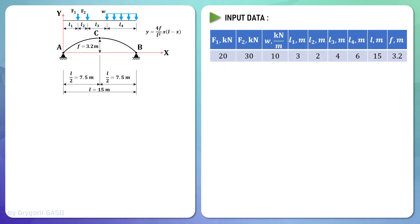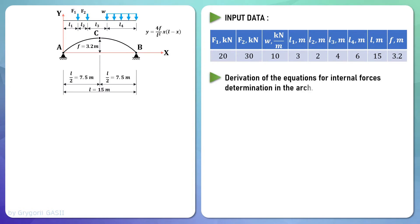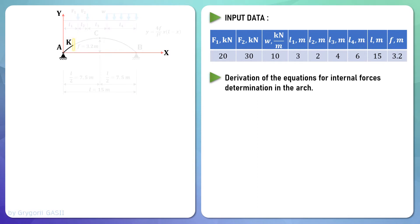Now let's derive the equations for internal forces determination in the arch. To determine the internal forces in the arch, the section method is used. Split the arch by a cross-section in any spot relative to the origin of the coordinate system. Let's designate this cross-section as capital K. Consider only the left part of the arch. The action of the right part on the left part is transmitted through internal forces in the section — the bending moment, shear, and axial forces, which occur to the left part at the cross-section.